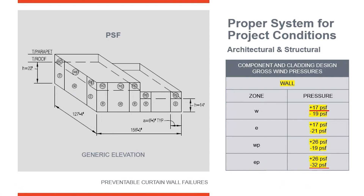If we took that first wind load of positive 17 PSF and evaluated the entire building on that value, we would fall terribly short of the actual wind pressure in the corner zones along the roof line. That's why we have to look zone by zone, identify the worst case scenario, and then recognize the relaxed load in center zone W — also often referred to as zone 4. We must calculate the extreme pressures found on the corners and the backside of a building.